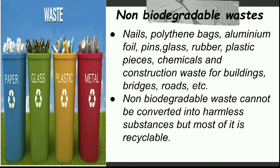The second type of waste material is non-biodegradable waste — waste that our biological environment cannot degrade. Examples include nails used on walls, polythene bags which we discussed last time and which take more than 10 minutes to degrade, aluminum foils, pins, glass, rubber, plastic pieces, chemicals, and construction waste for buildings, bridges, and roads. All of these are non-biodegradable waste.